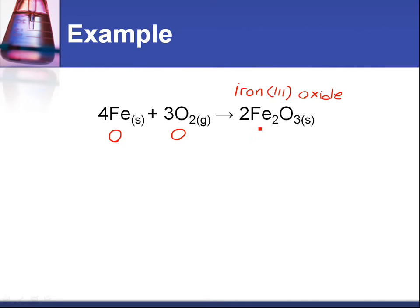On the right-hand side we have the compound iron oxide, so let's assign oxidation numbers. It's iron(III) oxide, which means the iron has an oxidation state of plus three. And as we know, oxygen as part of a compound has an oxidation state of negative two. So looking at the change in oxidation number, the iron has gone from zero to plus three and the oxygen has gone from zero to negative two.